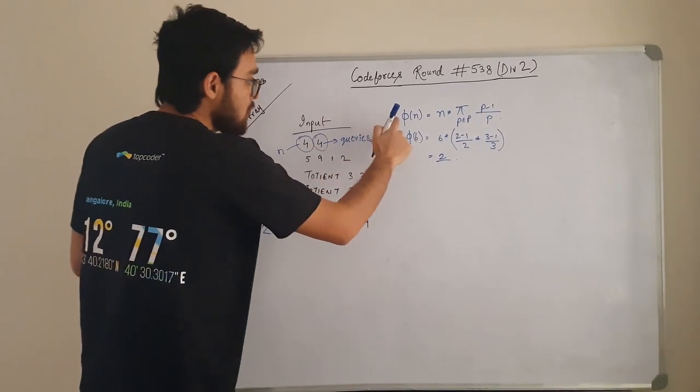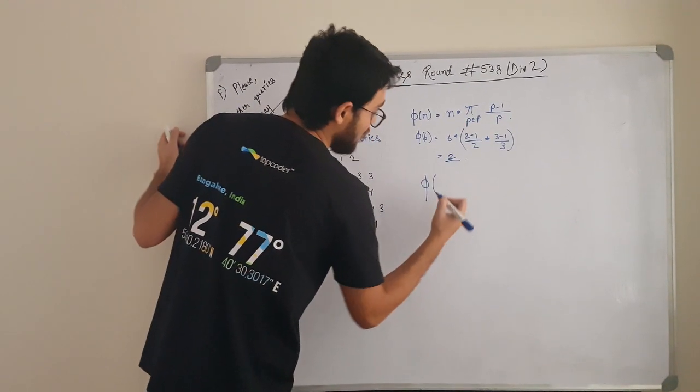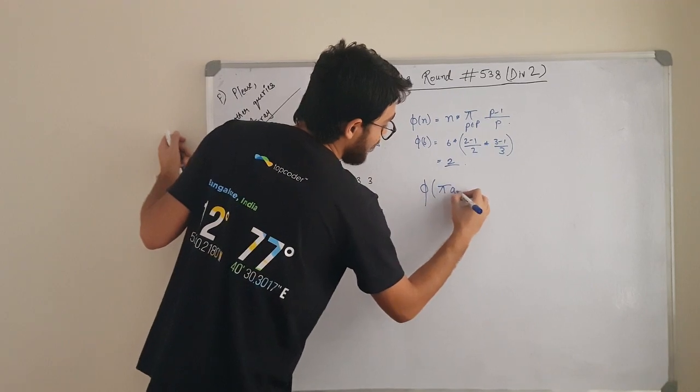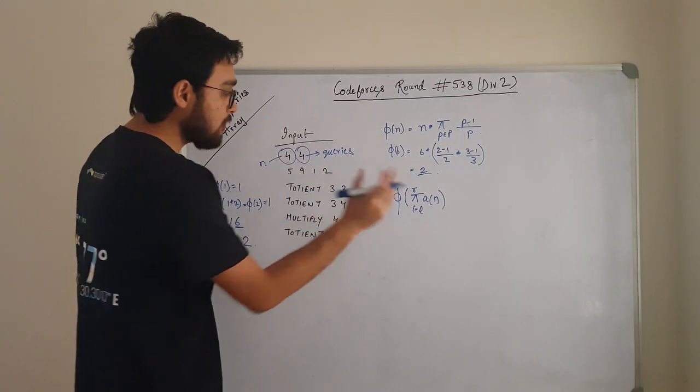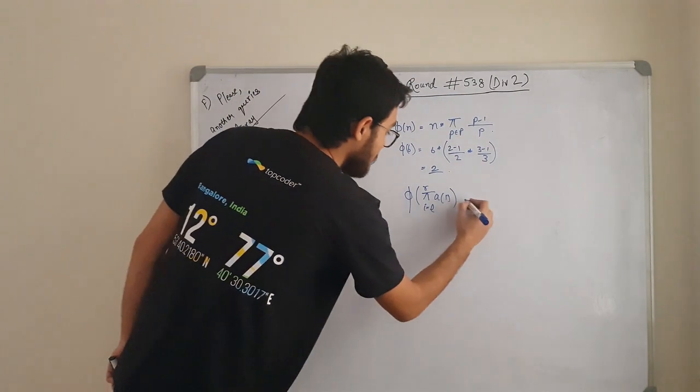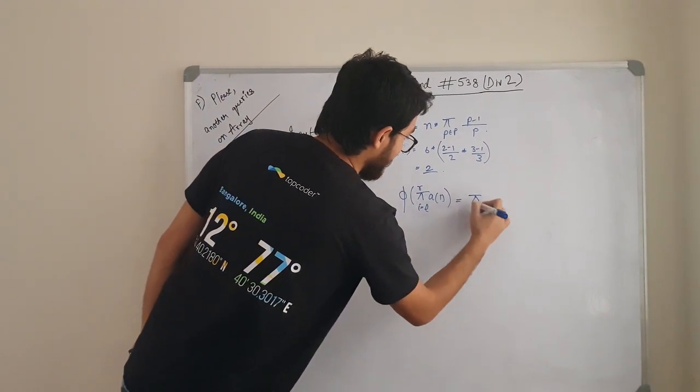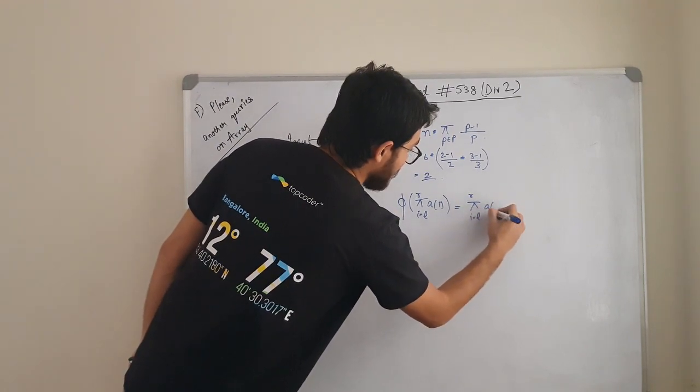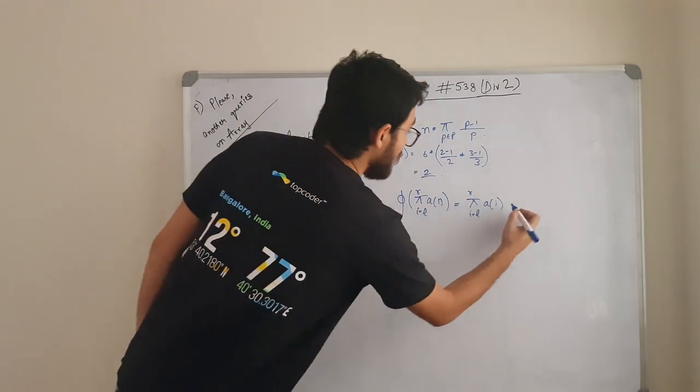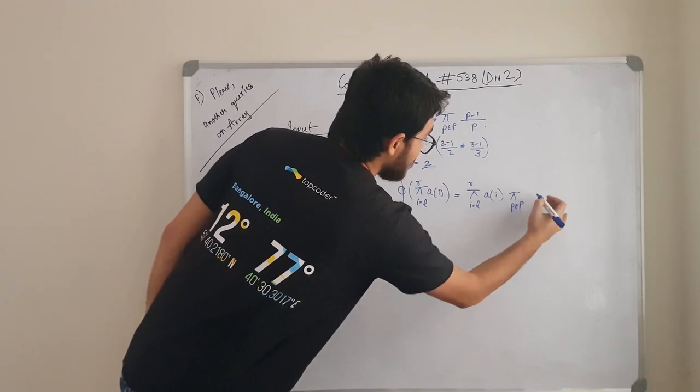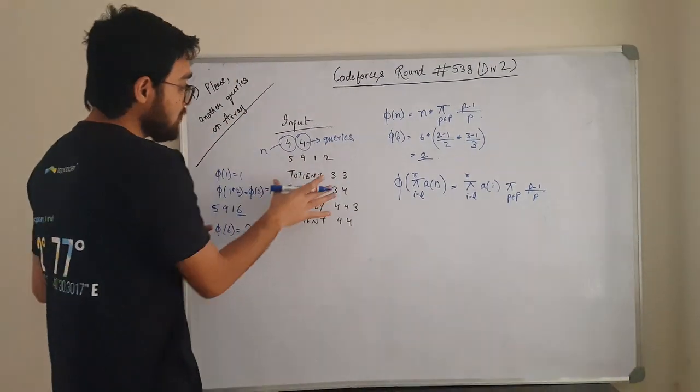Now, our question wants us to find this torsion function for product. What the question wants us to find is φ of a[i] where i ranges from L to R. If we put the same thing in this formula, what we will get is this thing is going to be n. This is our n here: product i = L to R of a[i]. Now, we need the primes in this product. We have product of p along to (p - 1) / p. This is what we need to find in case of this torsion function.